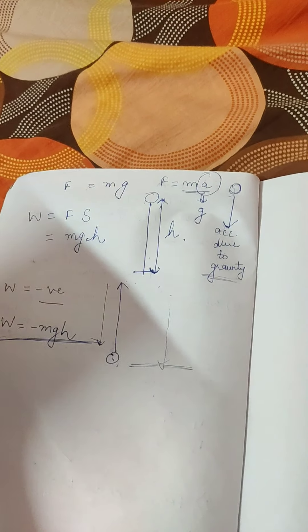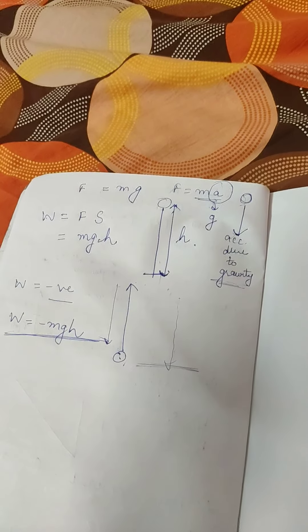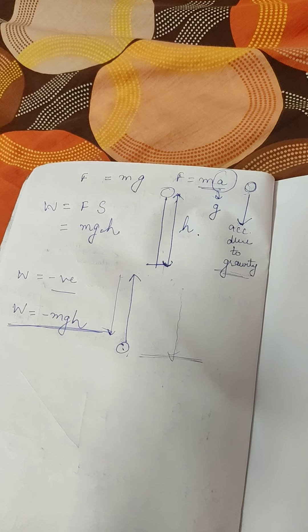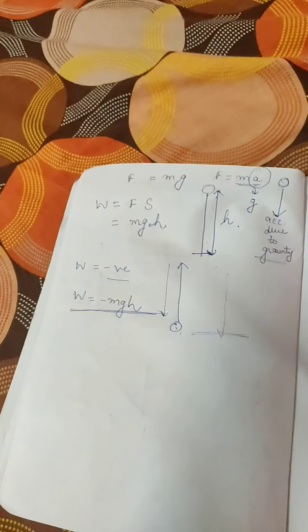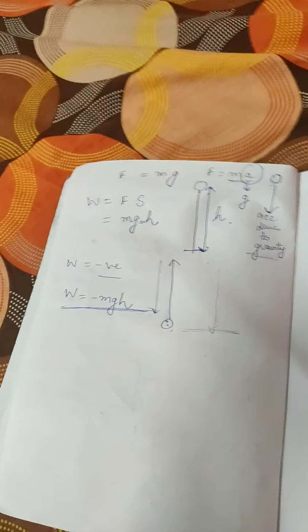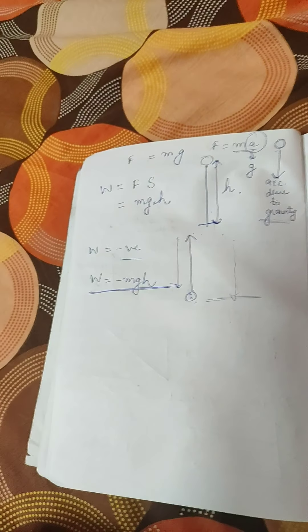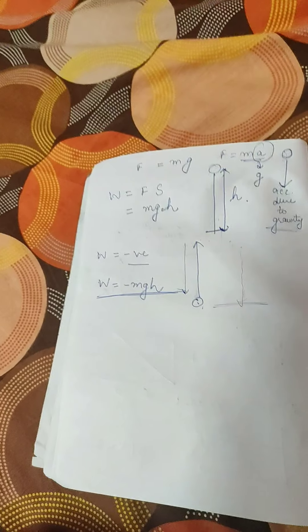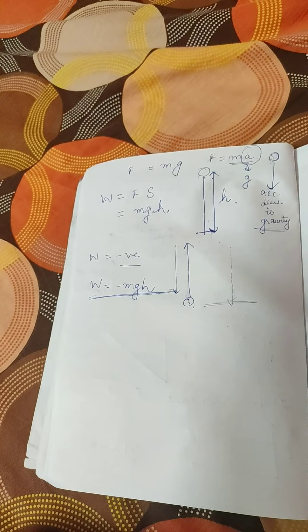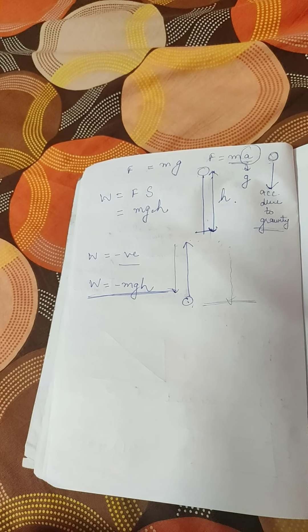The next part covers units, given in your book — you can read those by yourself. One important thing: the definitions are important in this part. You need to write all the converted units in your physics notebook along with the definition of one joule and one erg.